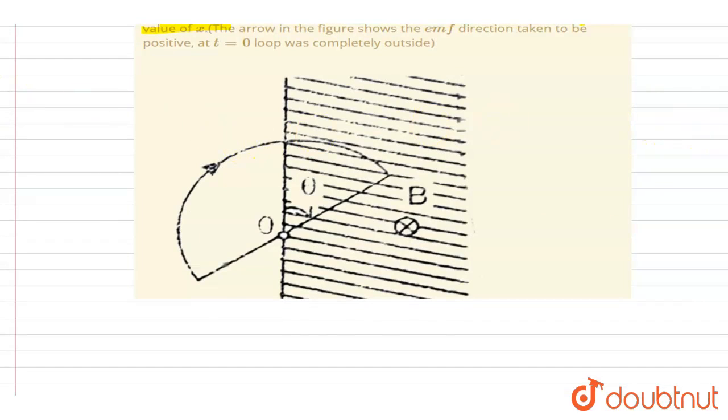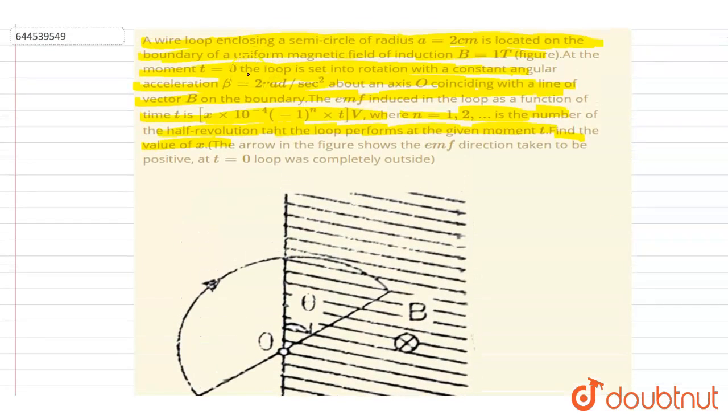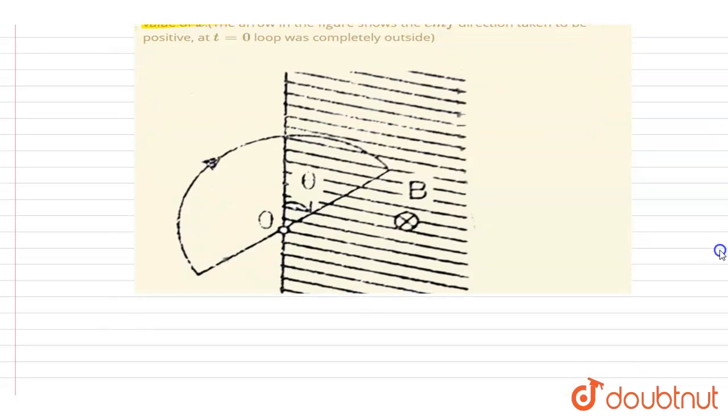So if you see here, this is rotating with angular acceleration two radians per second square, radius is two centimeter, magnetic field is this. At any instant, the angle rotated will be half alpha t square.